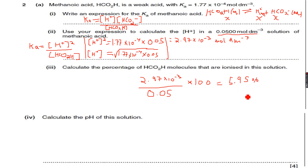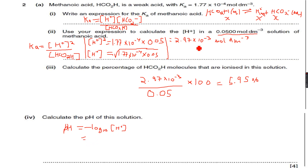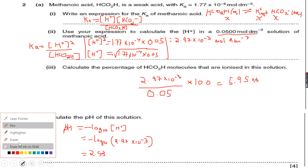This confirms it is a very weak acid, since only 5.95% of the methanoic acid molecules dissociated. Now calculate the pH of the solution: pH is −log₁₀[H⁺]. We already calculated [H⁺] = 2.97×10⁻³, so pH = −log₁₀(2.97×10⁻³), which gives 2.53. This is slightly less acidic compared to stronger acids.